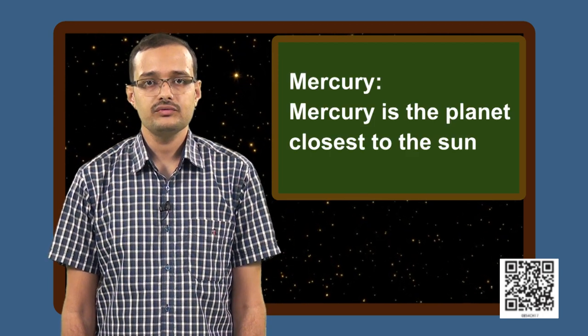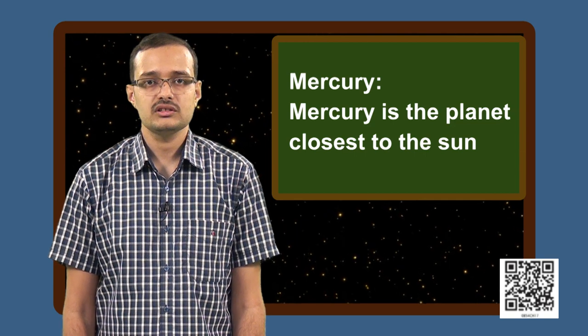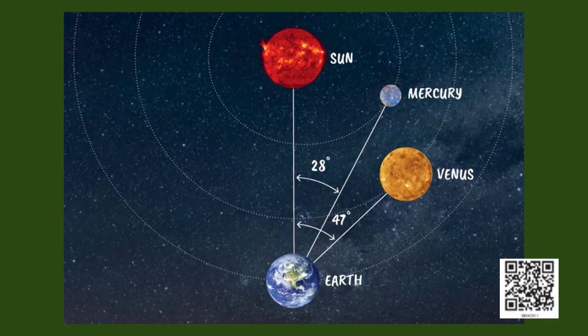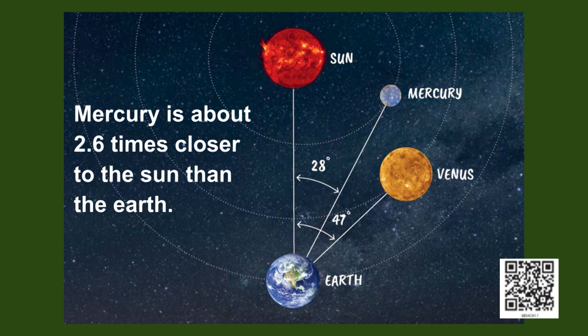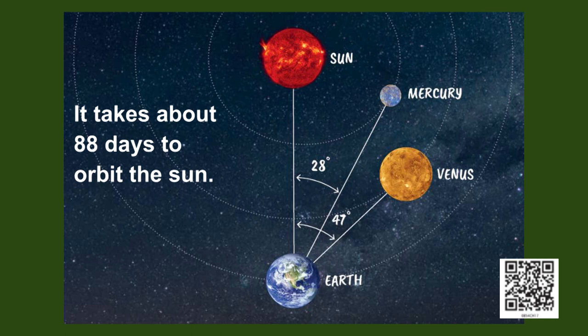We will begin with the planet Mercury, which is the closest to the sun. Mercury is the smallest planet in the solar system. Since Mercury is very close to the sun, it is not very easily visible in the night sky. Mercury is about 2.6 times closer to the sun than the earth is and it takes about 88 days to orbit the sun.